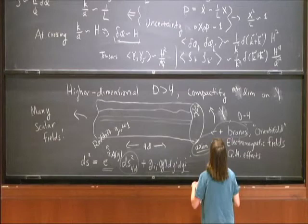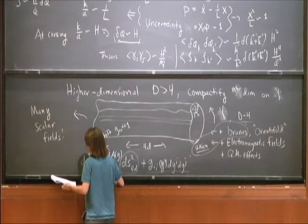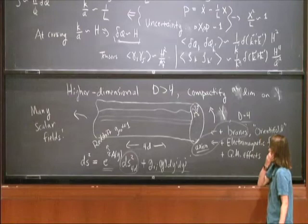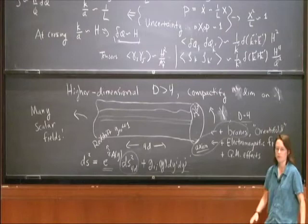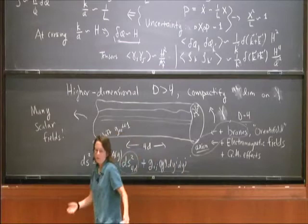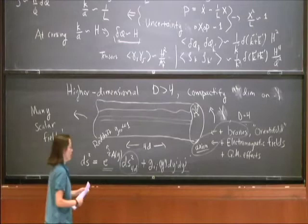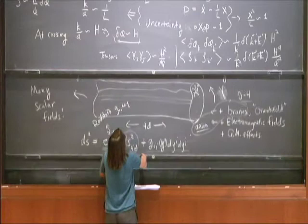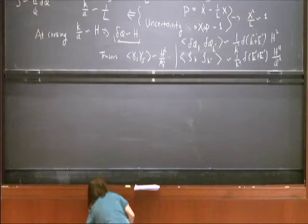This is quite complicated, but the problem is conceptually not that difficult. How do you start from a higher-dimensional Einstein theory plus all these sources, reduce it, and get a potential energy and kinetic terms for these scalar fields? Conceptually it's not a difficult question — technically, it is. Let me give you more intuition for how it works.